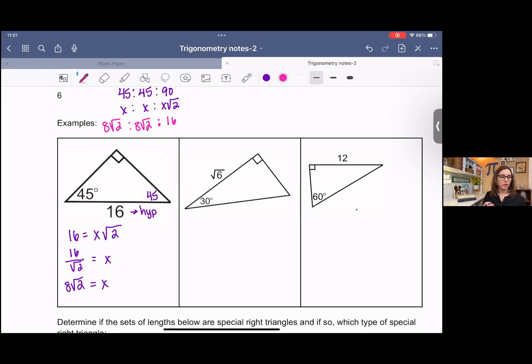The missing sides are 8 square root 2 and 8 square root 2. So the three sides of this triangle are 8 root 2, 8 root 2, and 16. And that's it. We have found every missing piece of this triangle.